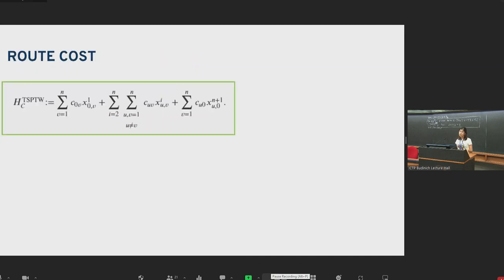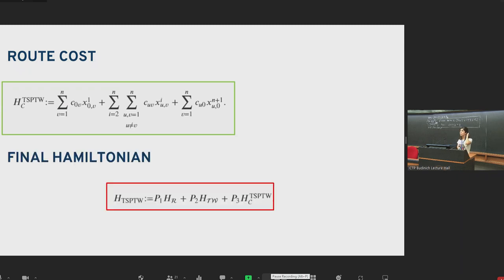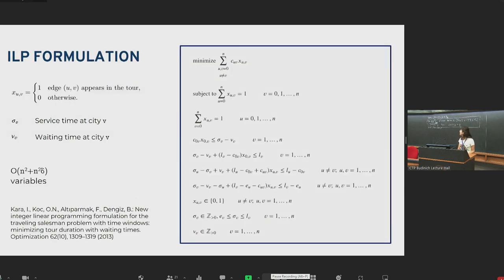And finally, this is the cost of the route. The first one is just the cost of traveling from city zero to the first visited city. Then we have the cost of all the edges in between. And finally, we have the last visited edge cost. This is overall how our final Hamiltonian looks like. It involves the route constraint term, time windows term, and the cost term. Here, P1, P2, P3, they are penalty coefficients. Indeed, you can take P3 to be one. Then you should adjust P1 and P2 so that they are large enough to override the cost, but not small enough so that they get violated.